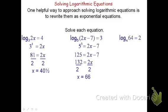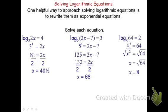For the next one, x is in a different position — it's in the base. When I rewrite this as an exponential, I get x squared equals 64. To solve, I take the square root of both sides. Normally that gives plus or minus 8, but the base of a log can never be negative, so x equals negative 8 is not valid. The only answer is x equals 8.